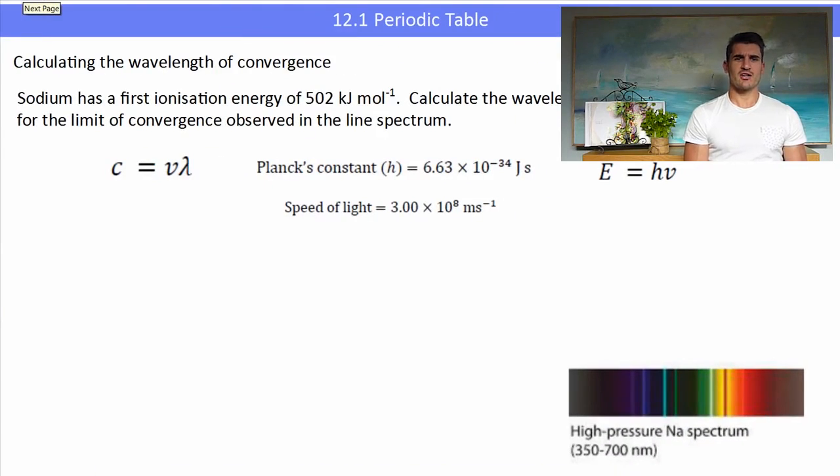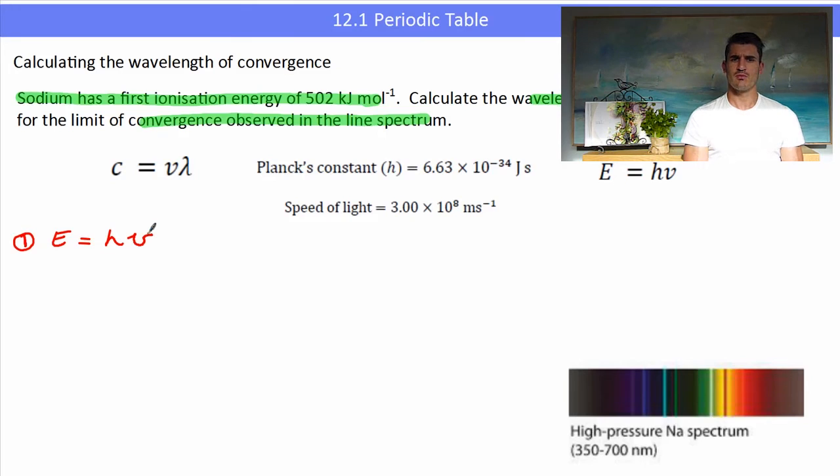So here we are asked to calculate the wavelength of convergence. We have been talking about sodium so we are going to focus on sodium. Sodium has a first ionization energy of 502 kilojoules per mole. Calculate the wavelength for the limit of convergence observed in this spectrum. So whereabouts in the spectrum do the lines start to converge? So step one is we need to use the formula E equals Planck's constant times the frequency because we need to find the frequency.